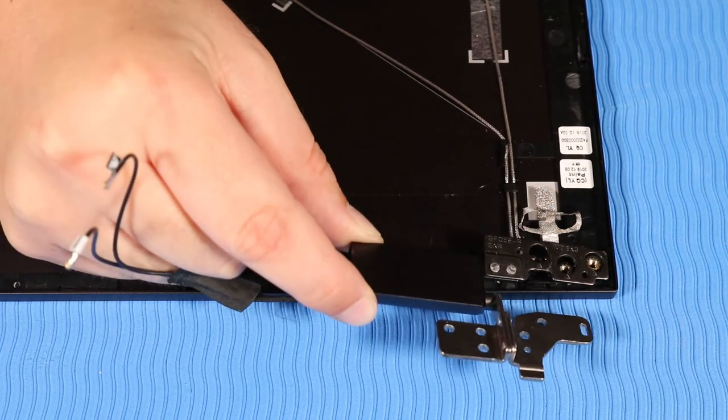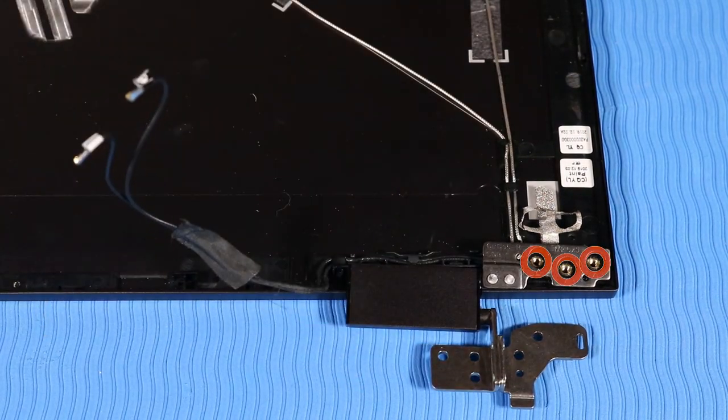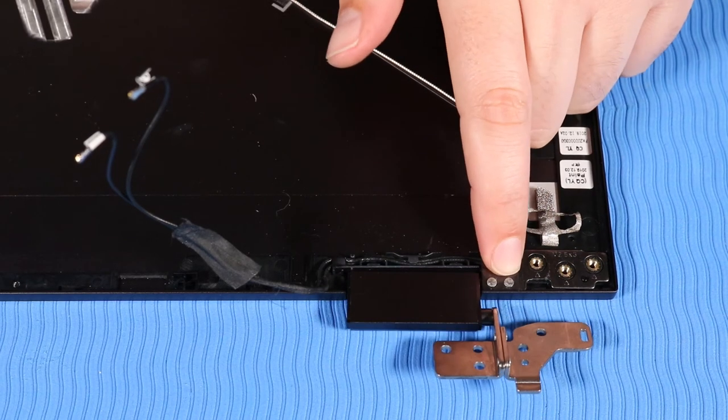Place the right hinge into position on the display enclosure. Replace the three P1 Phillips broad-head screws that secure the right hinge to the display enclosure.